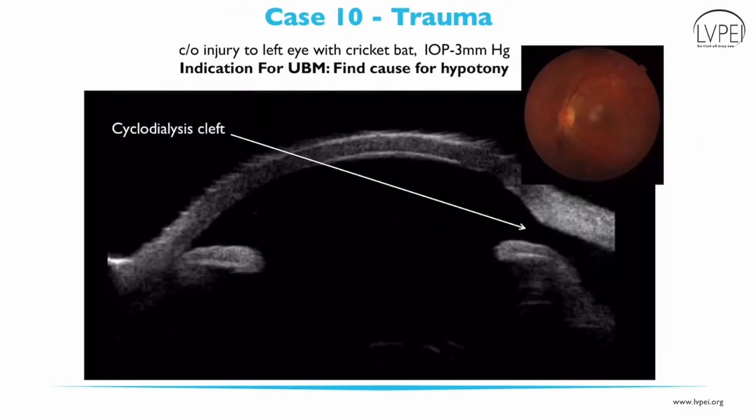This patient presented with injury to the left eye with a cricket bat and had intraocular pressure of 3 mmHg. UBM helped in finding the cause for hypotony by diagnosing a cyclodialysis cleft. We can see clear separation of the ciliary body from the scleral spur, which leads to creation of a direct connection between the anterior chamber and the suprachoroidal space.